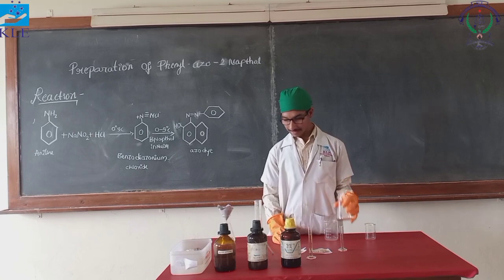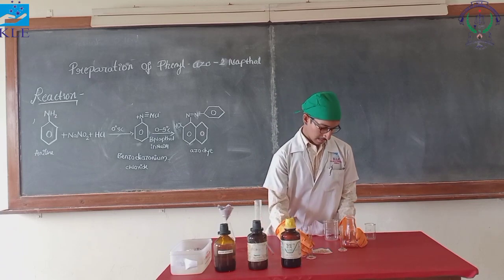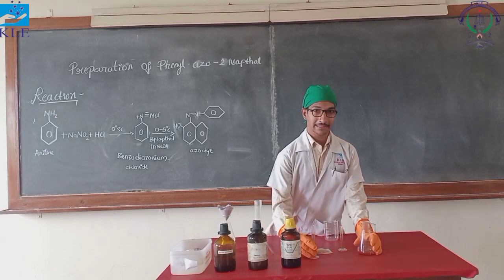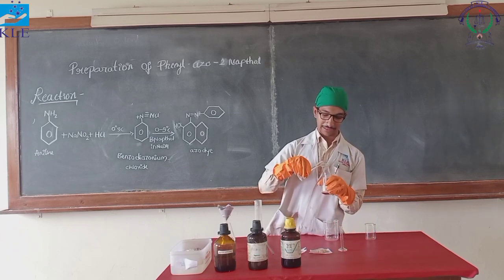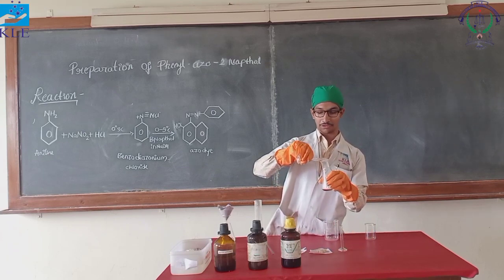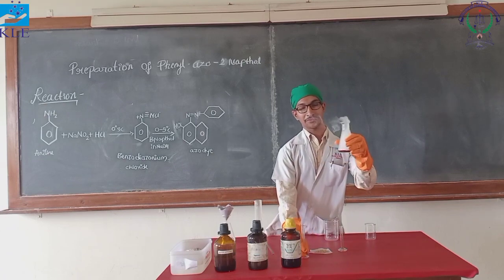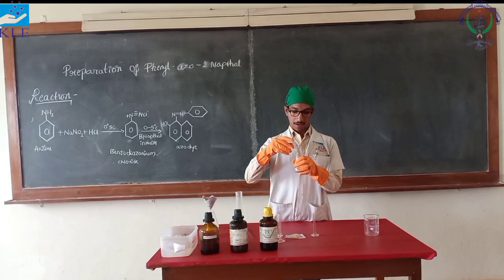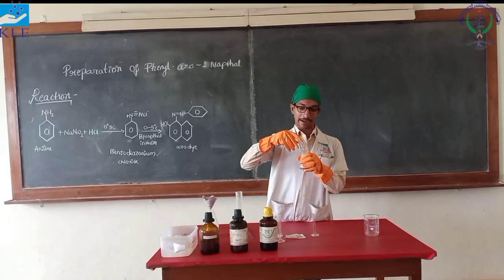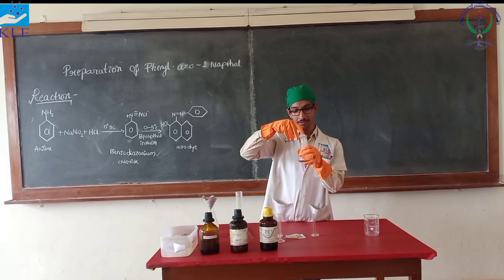Coming to the procedure. Take 4 ml of aniline in a conical flask. To this add 10 ml of concentrated HCl. As aniline is carcinogenic, we have to use personal protective equipment like gloves, respiratory mask, and goggles while handling aniline. After adding concentrated HCl, we can see white fumes are coming. To this add 20 ml of distilled water to make the solution homogeneous.